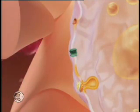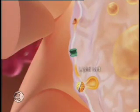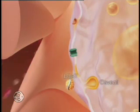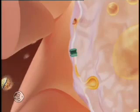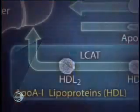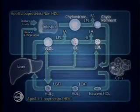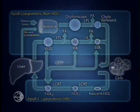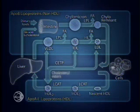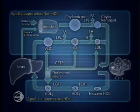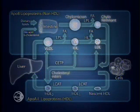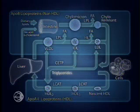HDL also collects cholesterol from both lipid rafts and caveolae within the cell membrane. In these ways, HDL facilitates cholesterol efflux from the macrophage. Now rich in cholesterol esters, HDL2 engages in an exchange with triglyceride-rich lipoproteins, mediated by cholesterol ester transfer protein, CETP. Cholesterol ester from HDL2 is transferred to ApoB-containing lipoproteins in a one-to-one exchange for triglycerides, resulting in further cholesterol enrichment of ApoB lipoproteins and triglyceride enrichment of HDL.